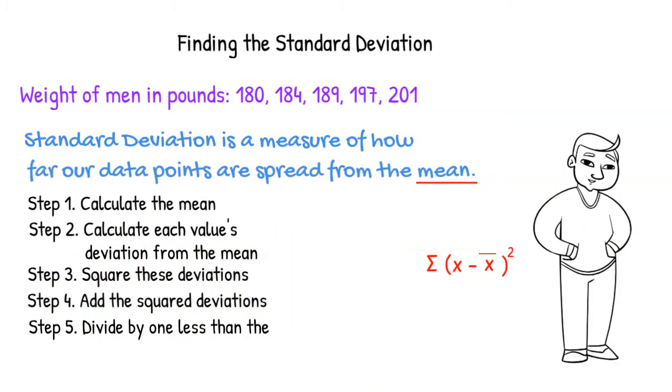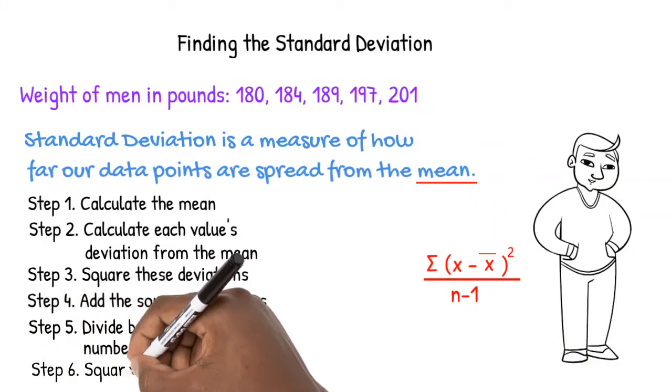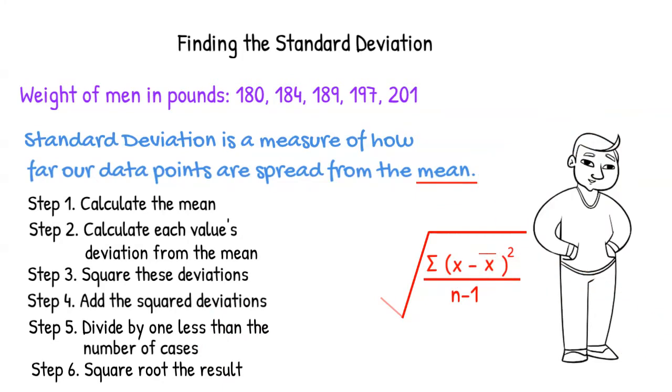Step 5: Divide the sum by one less than the number of cases. And Step 6: Square root the result. The value obtained is called the standard deviation.